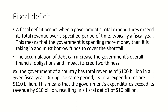For example, if a government has total revenue of $100 billion but its total expenditures are $110 billion in a given fiscal year, the government's expenditures exceed its revenue by $10 billion, resulting in a fiscal deficit of $10 billion. A fiscal deficit has both advantages and disadvantages for an economy.